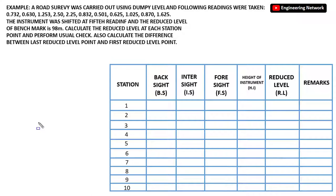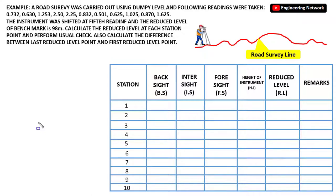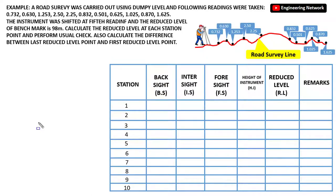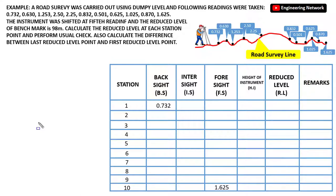Let's assume this is the road survey line, and here I have installed the instrument. All these are the station points on which I have taken all the readings. Remember that the first reading will always be the back sight, which is 0.732, and the last reading will always be the fore sight, which is 1.625.